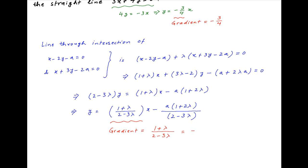And this is equal to minus 3 upon 4, because this line is given to be parallel to 3x plus 4y is equal to 0 and therefore their gradients must be the same. Cross multiplying,